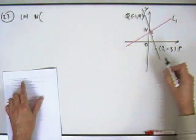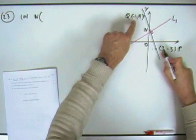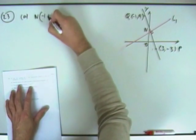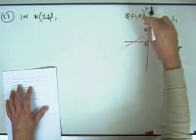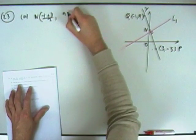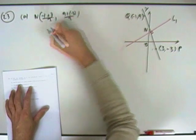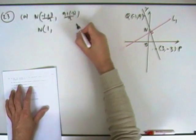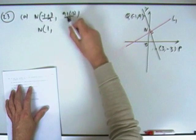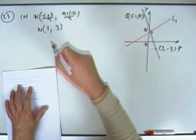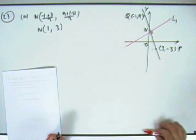Right, N is going to be the midpoint, average of the coordinates, add the two coordinates. I've got a -1 and a 3, and I've got a 9 and a -3. So N is going to be the point, that comes to 2, 2 over 1 is 1, so 2 over 2 is 1, and that's 6 over 2 is 3, so N is going to be the point 1, 3, so that's the midpoint.